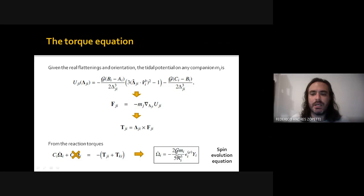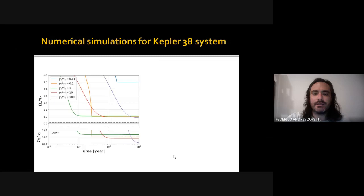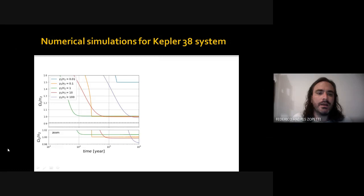From the reaction torque, we can calculate the variation in the spin of each body. Neglecting a particular term, we obtain the spin evolution equation. We thus have a set of four differential equations for each body. In this talk, I will focus on the results for the spins, which are probably the most interesting.